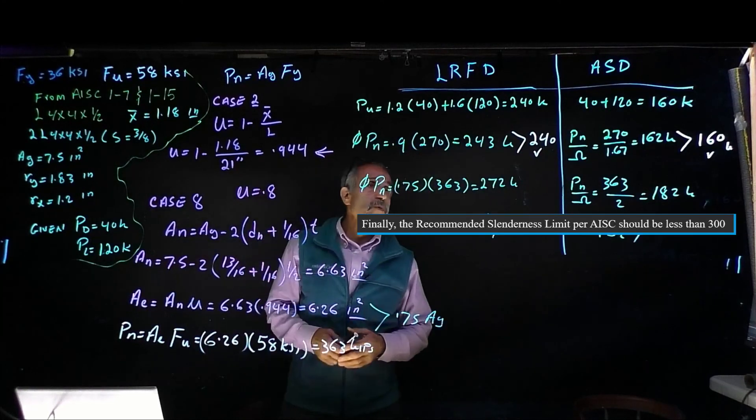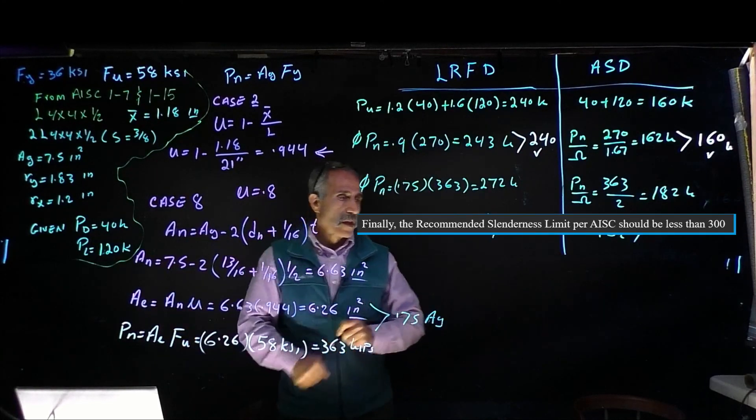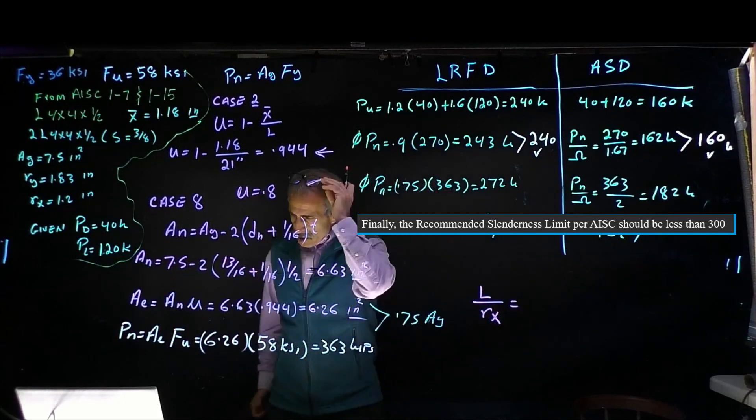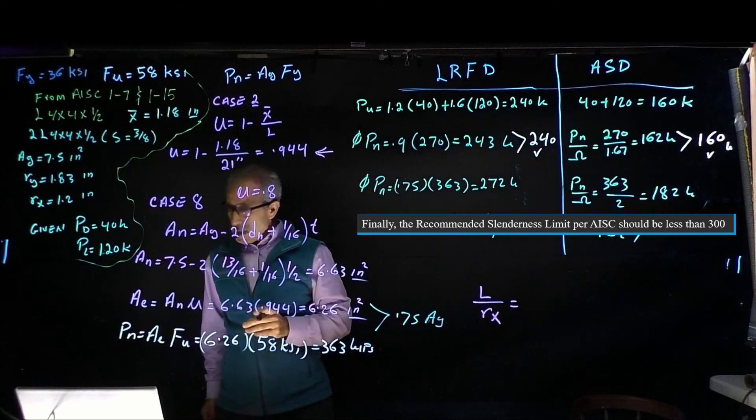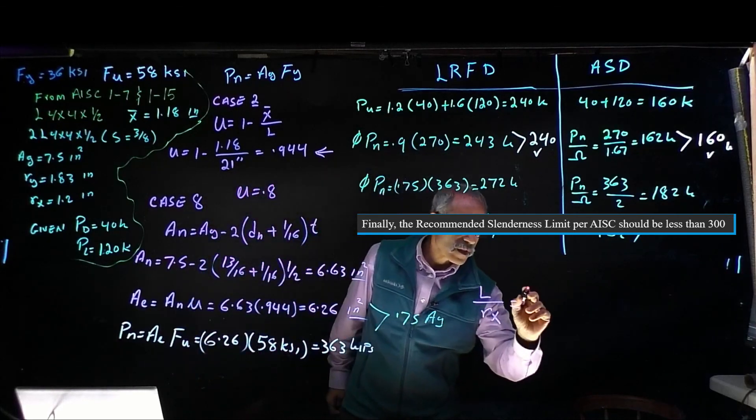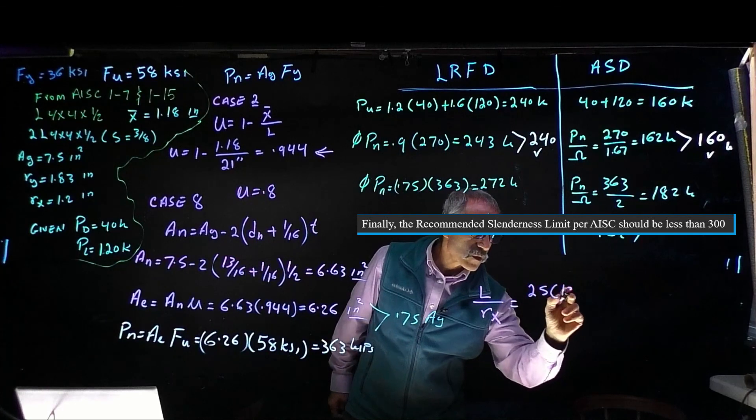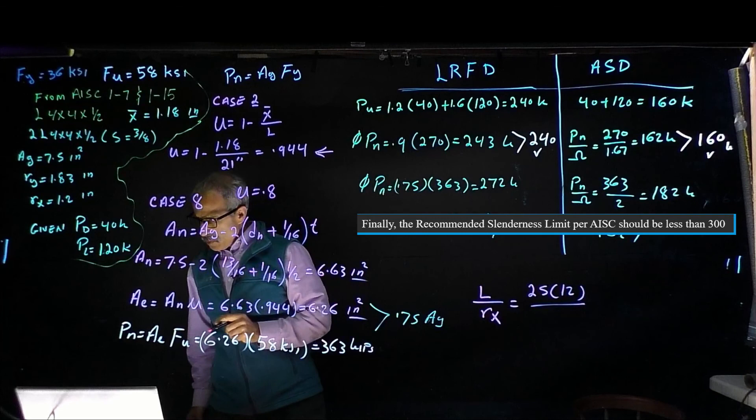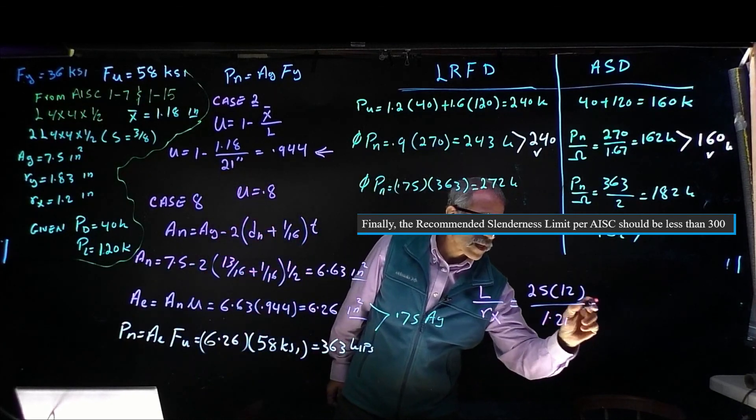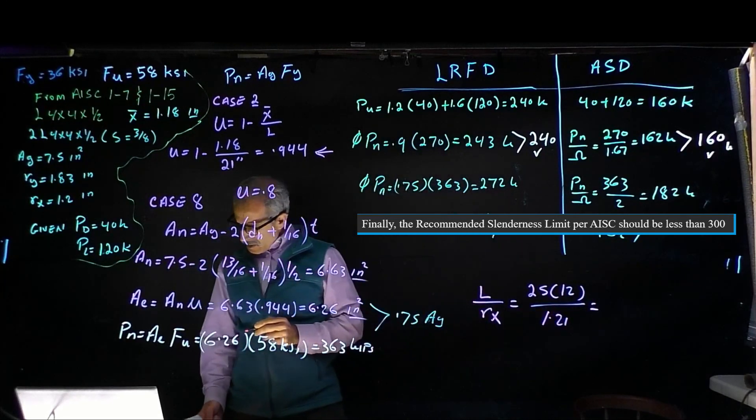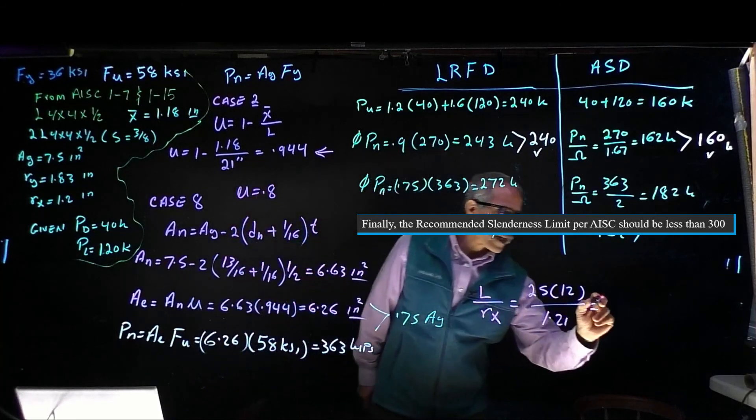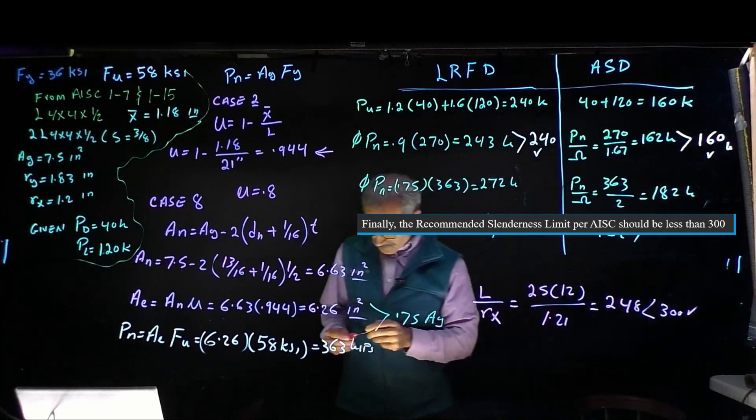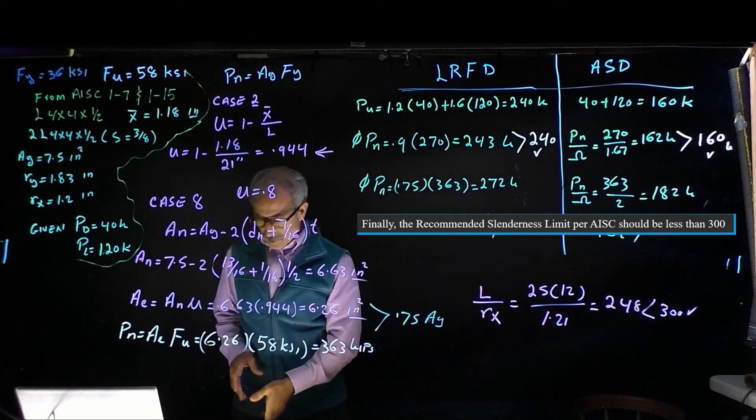Let's check section D4. We want to make sure L over rx is less than 300. Our L is 25 feet, so multiply by 12: 25 times 12 divided by rx, which is 1.2, comes out to 248, which is less than 300. Check complete. That's it.